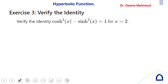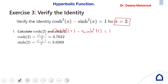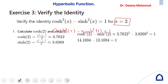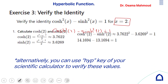For x = 2, verify that cosh²(2) − sinh²(2) = 1 by substituting the values. Alternatively, you can use the hyperbolic function keys on your scientific calculator to verify, since hyperbolic function values can be found directly by calculator.